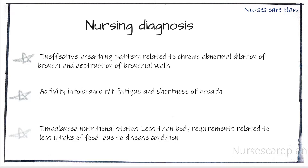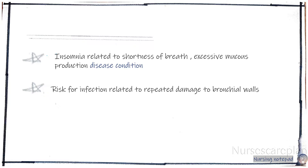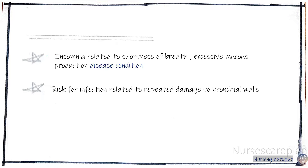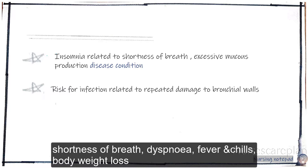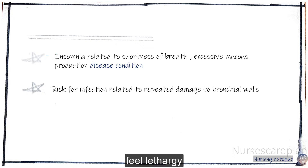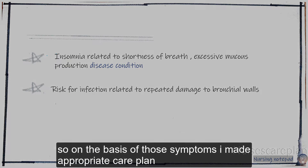These are the classifications for lung abscess. In my patient there are some characteristics which I found, and on the basis of those characteristics I formulated my care plan. My name is Jeetan and welcome to Your Nurses Care Plan. The characteristics are: chest pain while lying down, shortness of breath, dyspnea, fever and chills, body weight loss, cyanosis — a bluish discoloration of the skin — and lethargy.